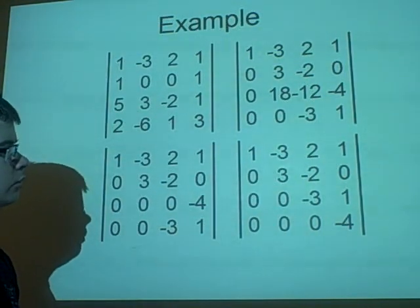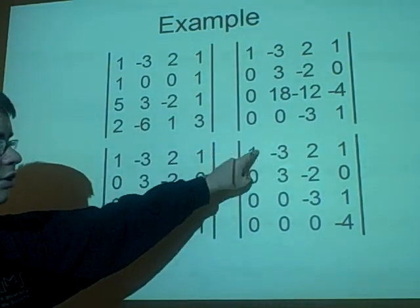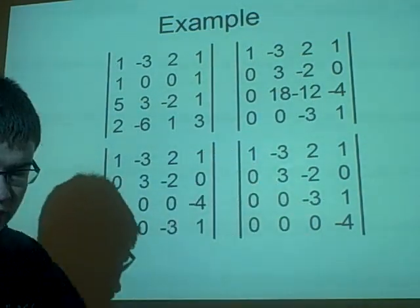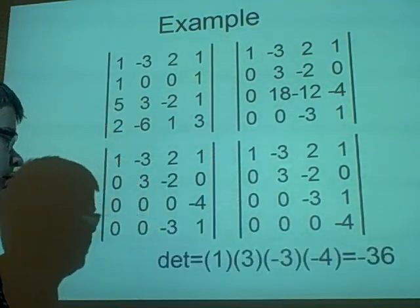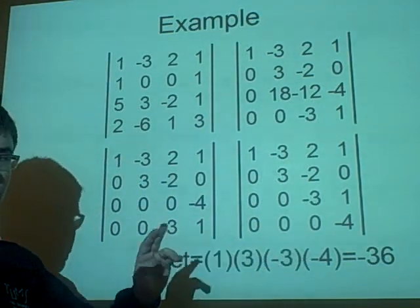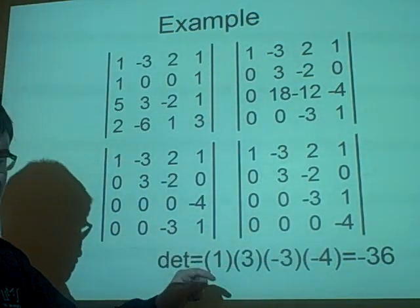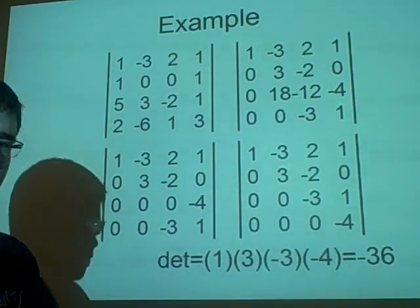So, now, what we do is, we multiply three, one times three, times minus three, times minus four. And, you do this. Now, this isn't correct. This isn't incorrect, I mean, with minus 36.